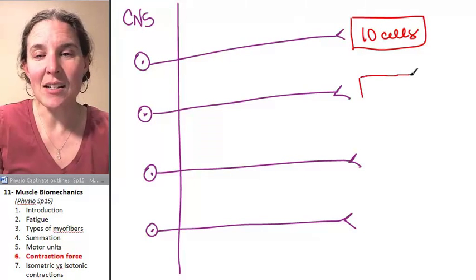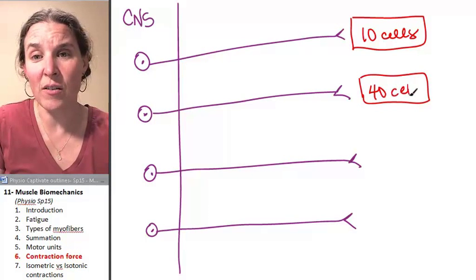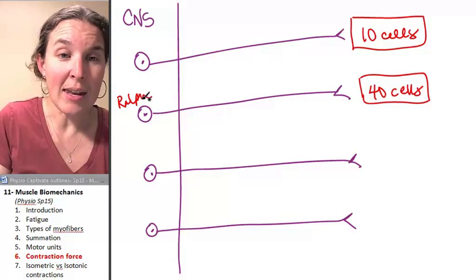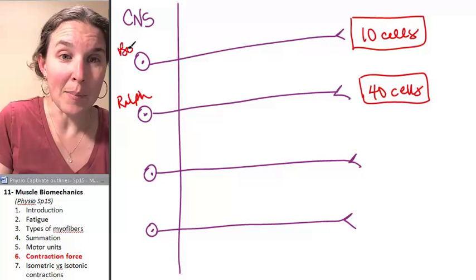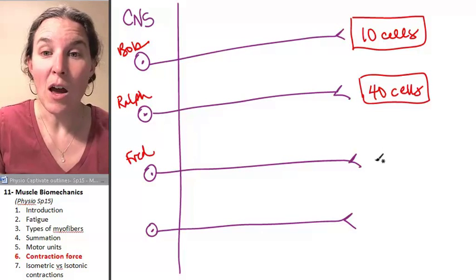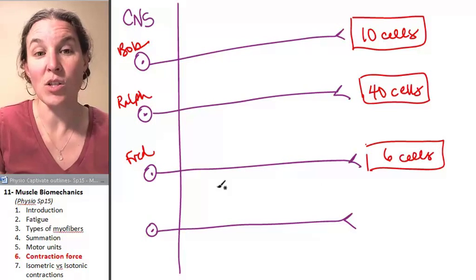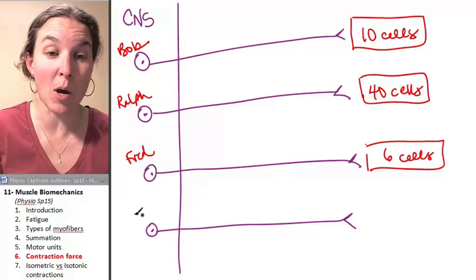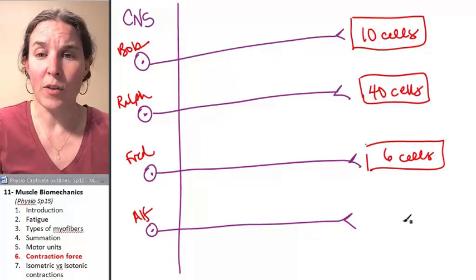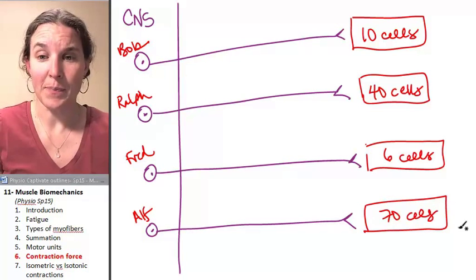And my second, you know what, I think I have to give these guys names. This one is going to be in charge of 40 cells. This is going to be Ralph. And this is going to be Bob. And then we're going to have Fred. Fred is going to be in charge of six cells. So Fred has a relatively small motor unit. And then we're going to have Alf. And Alf is going to be in charge of 70 cells.